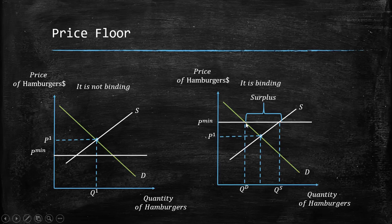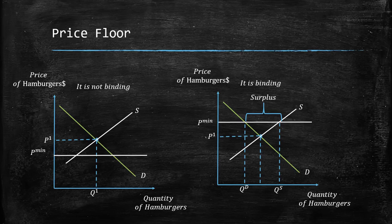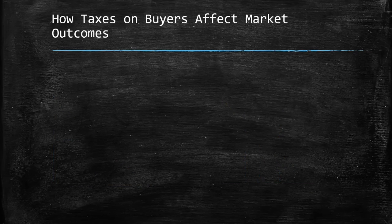If we talk about the labor market, this surplus means there are more workers prepared to work than the demand from companies. This is where the minimum wage has its incidence — when the minimum price is set higher than the equilibrium price.